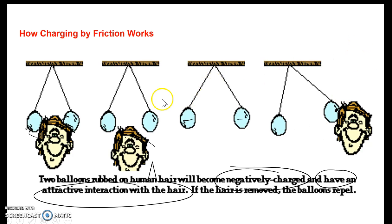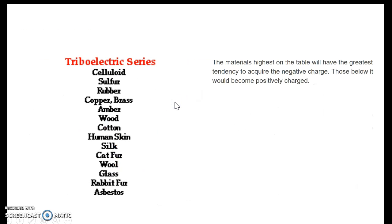We can determine what's positive and what's negative by using what's called the triboelectric series. You can see we have a vertical series with things at the bottom and things at the top. As we go up the table, we increase electron affinity.